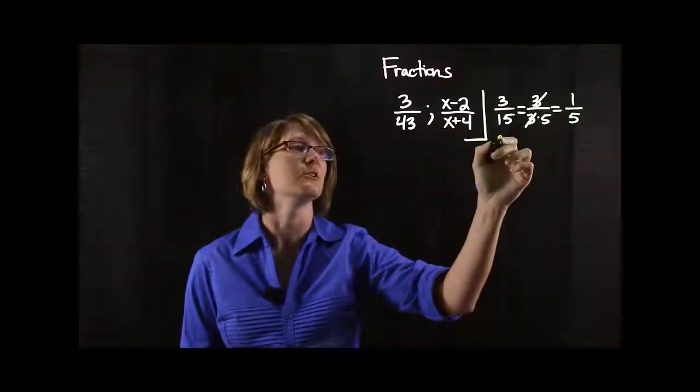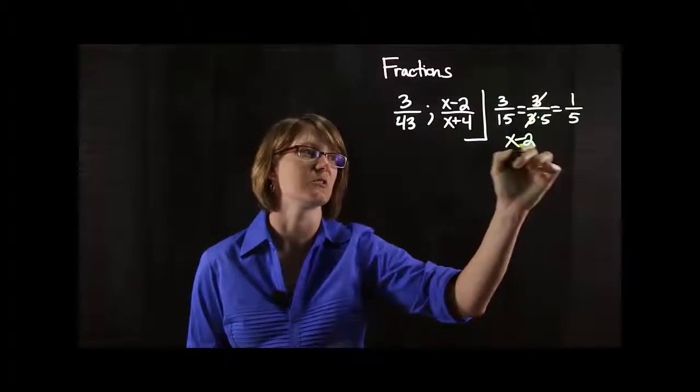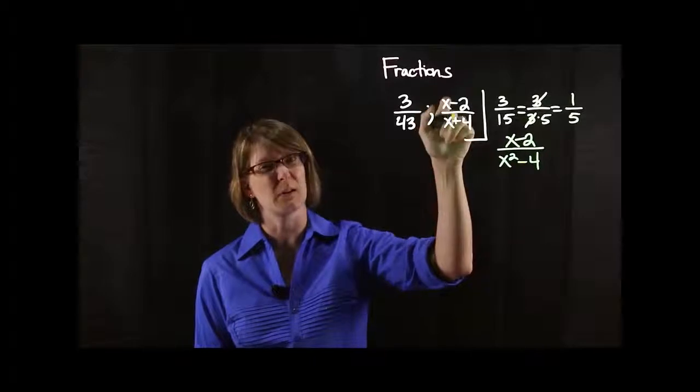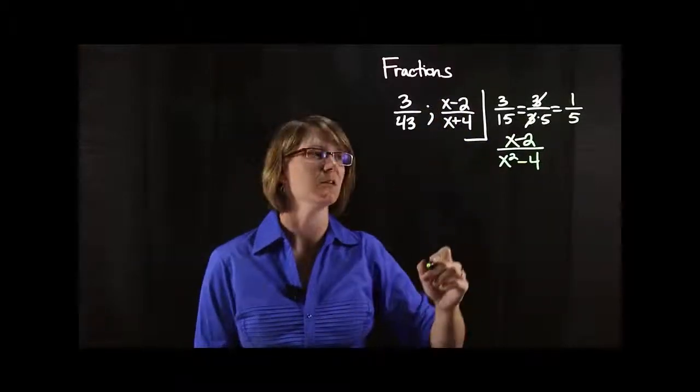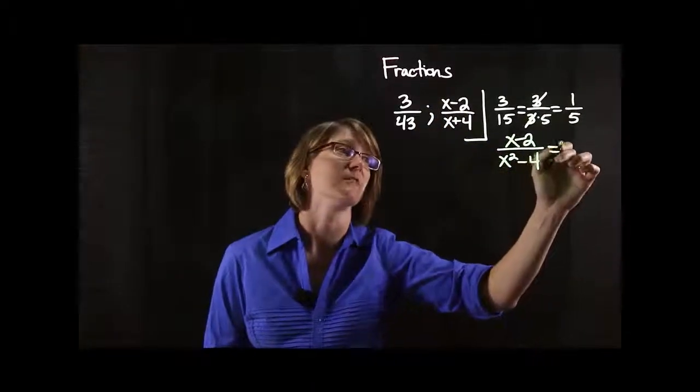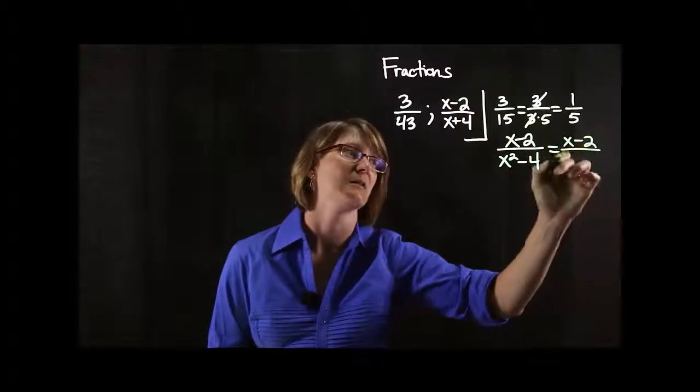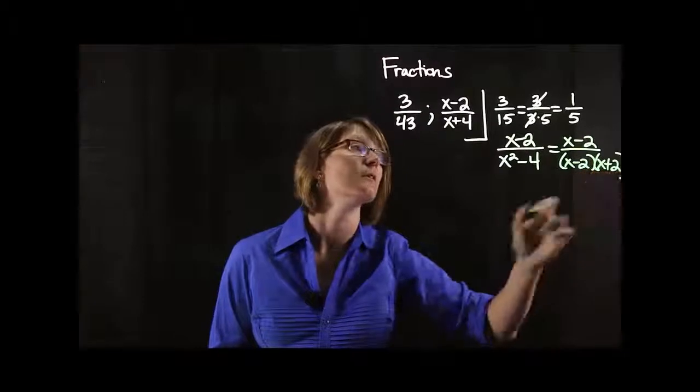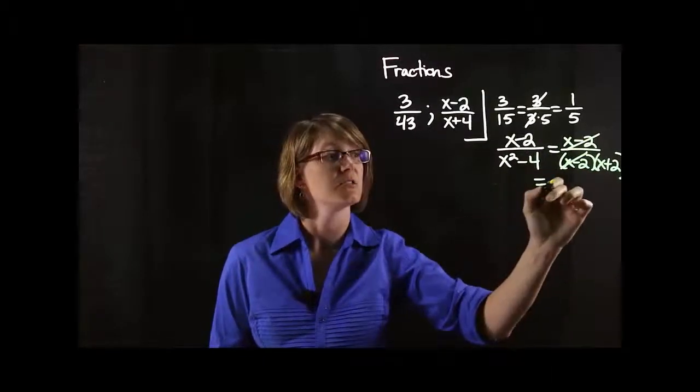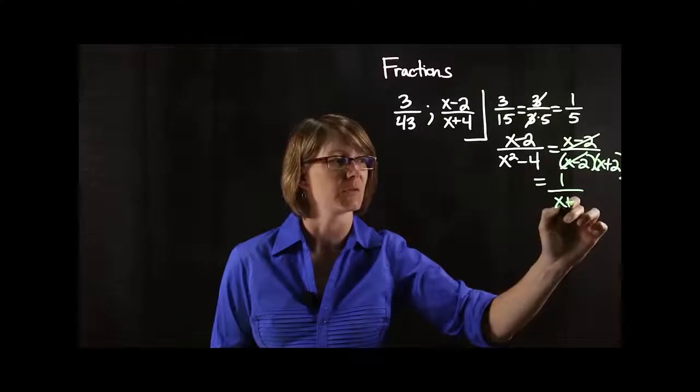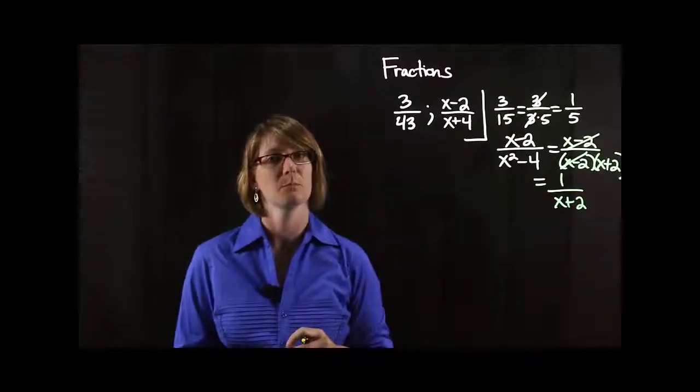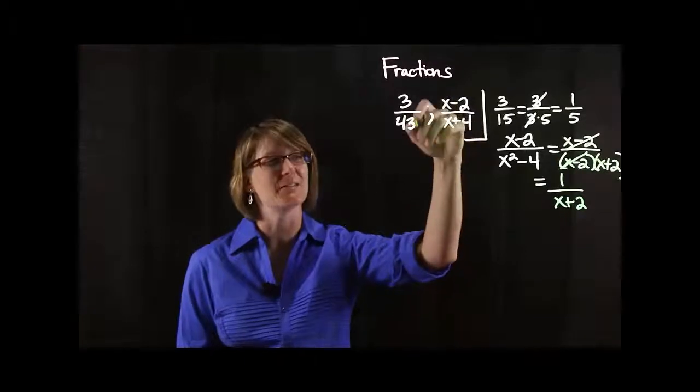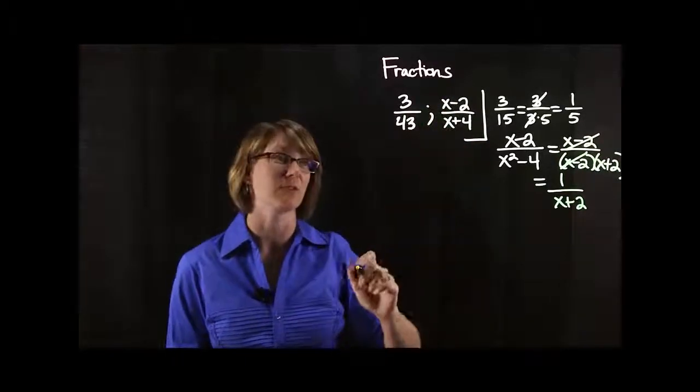In a similar way then if you had xs in there, if you had like x minus 2 over x squared minus 4, similar to what I had up here but I changed it just a little bit, you can factor that denominator. So you could factor that denominator as x minus 2 and x plus 2. And then we can cancel those factors out. So we're going to end up with 1 over x plus 2. So that's simplifying fractions. Just because they have something in common does not mean you can magically cancel it. You can only cancel factors.